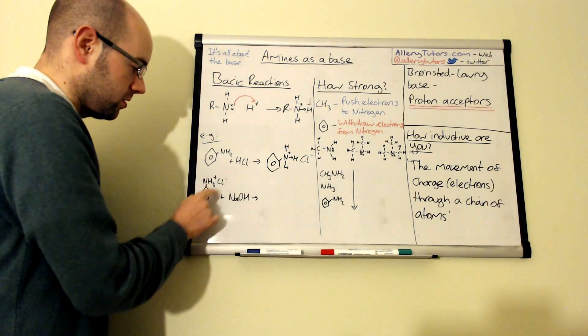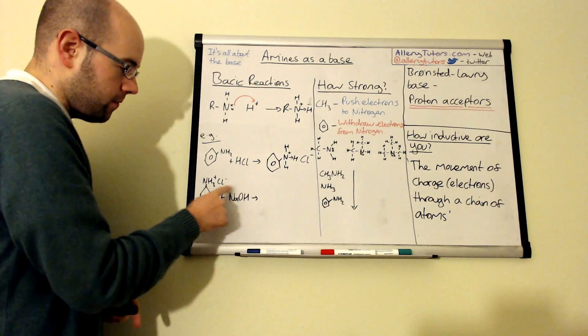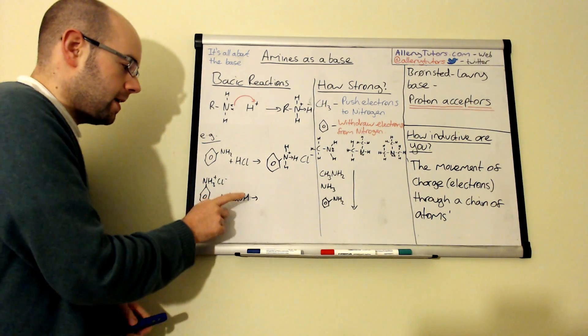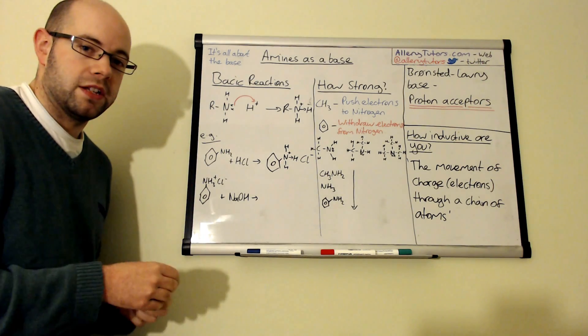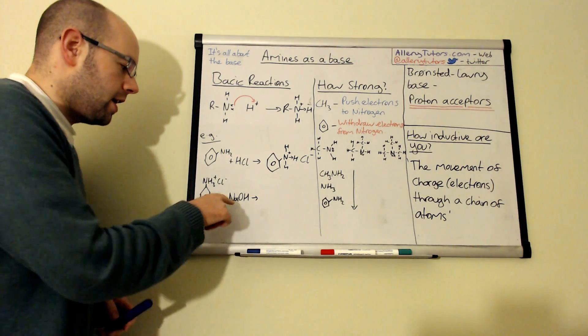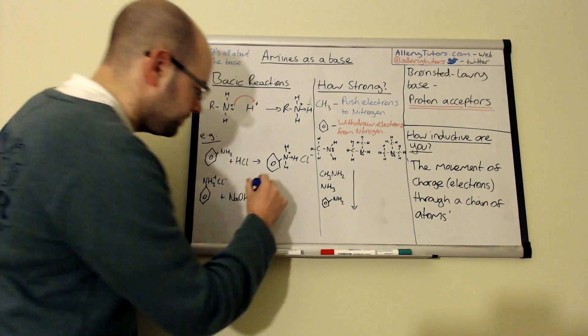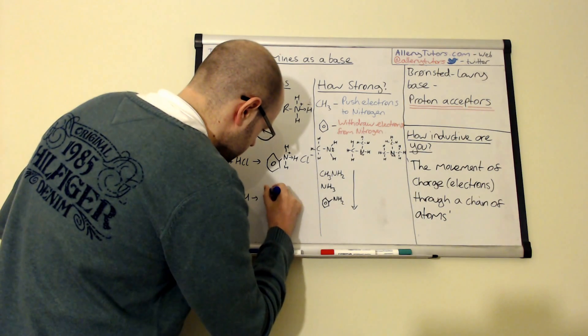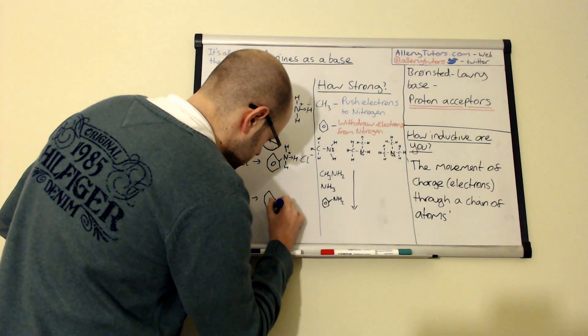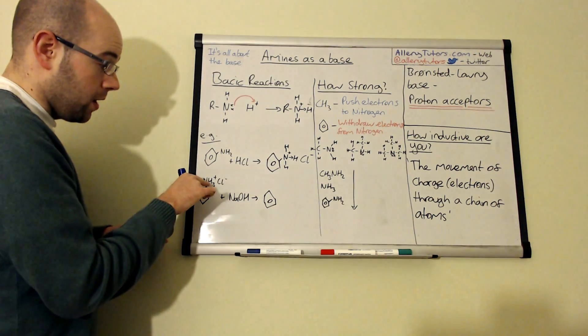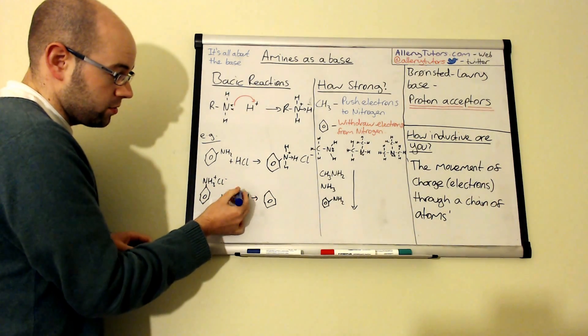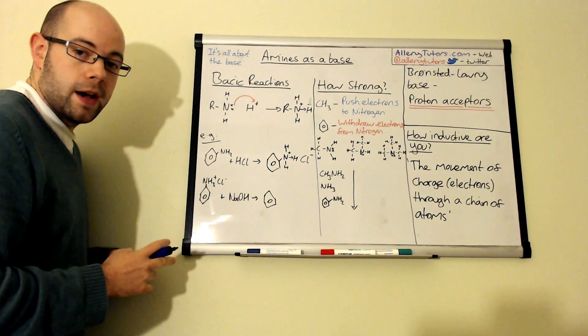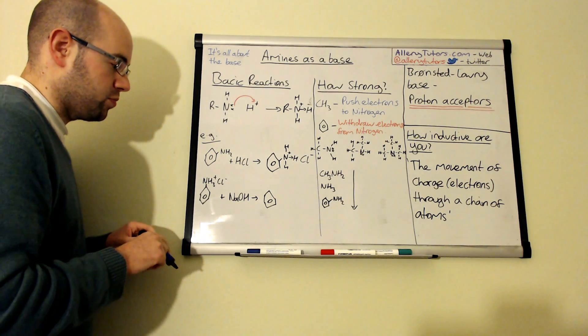Now we can take this soluble salt which I've redrawn down here. If we react that with a base, which is like a strong base like sodium hydroxide, we can actually get the insoluble amine back again. So we'll have our benzene ring which is there. Now what happens effectively this will then donate a proton to the sodium hydroxide because this is a base so it's going to accept the proton.